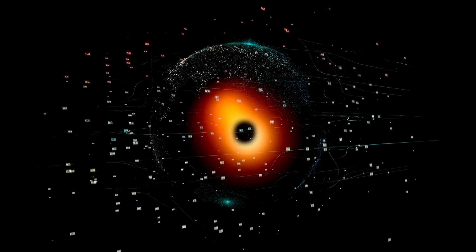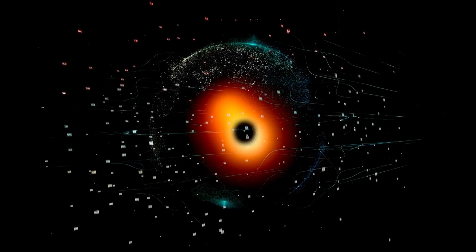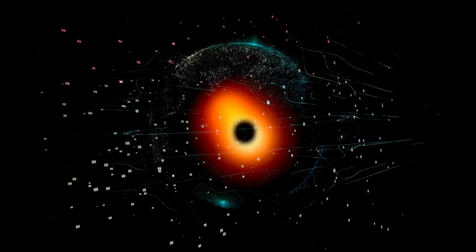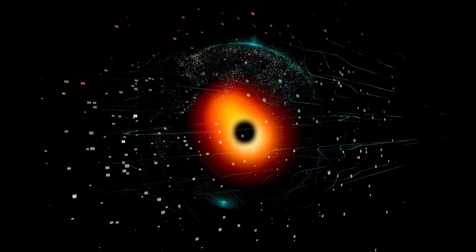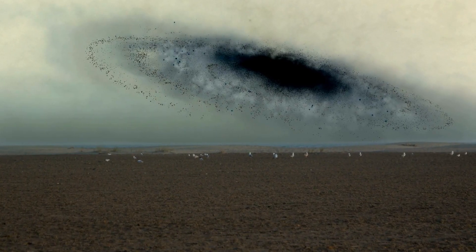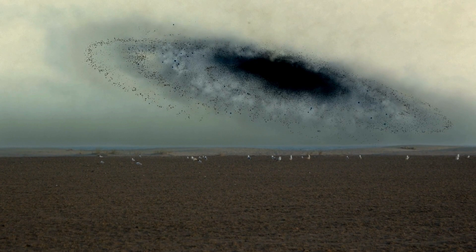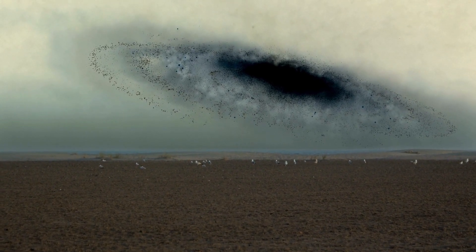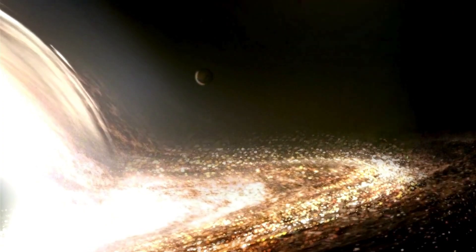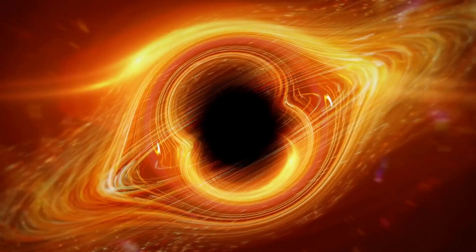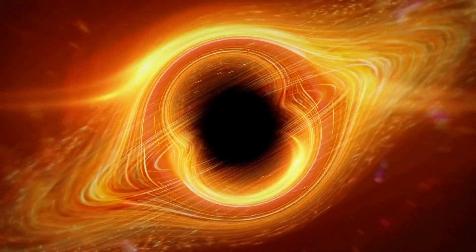Scientists have been fascinated by black holes for centuries, ever since they pondered objects in space so massive and dense that they could trap light. The most famous ideas about black holes were predicted by Einstein's theory of general relativity. Essentially, when a massive star dies, it leaves behind a tiny, dense core. If this core's mass is more than three times that of the sun, gravity overwhelms everything else, leading to the formation of a black hole.